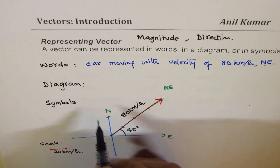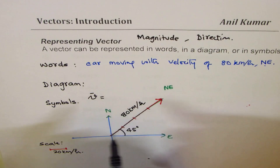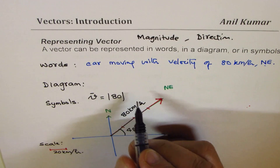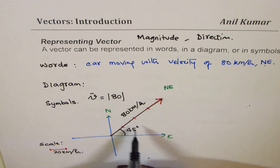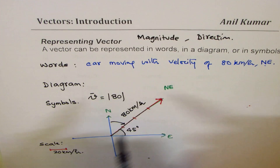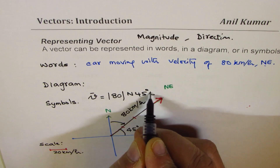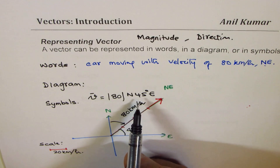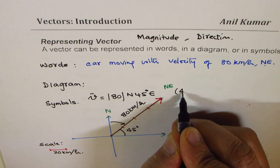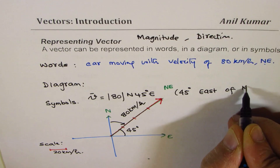A symbol representation looks like this: velocity V equals a magnitude of 80 (written as an absolute value), and the direction could be written as north 45 degrees east. We'll learn more about this nomenclature, but you should read this as 45 degrees east of north. So that is how the vector V symbol works.